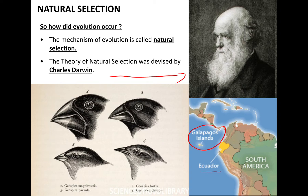Competition ensures the best adapted individuals will survive. For example, larger seedlings growing in a clump will be able to obtain key resources such as light, nutrients, and water more easily than smaller seedlings. As a result of this competition, the stronger individual will survive because the larger seedlings have an advantage. This means the weaker ones will die off and their genetic traits will not be passed on to the next generation. This competition for survival results in better equipped individuals, and this is the cornerstone of Darwin's theory of natural selection.